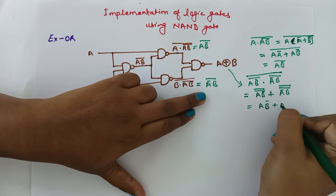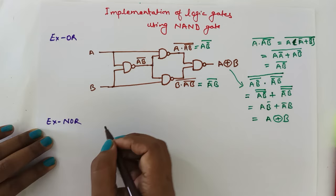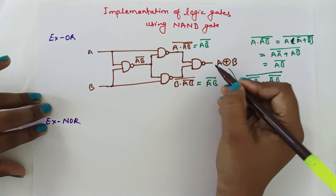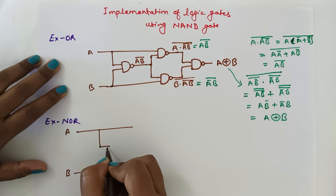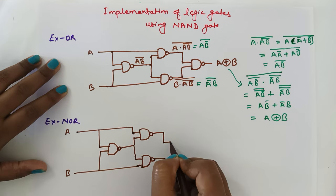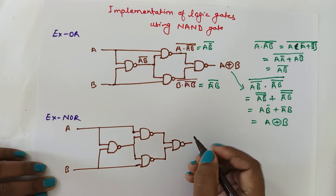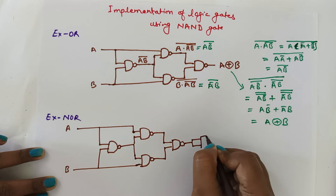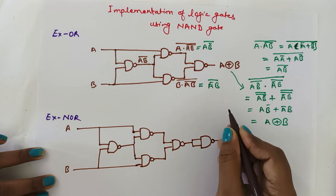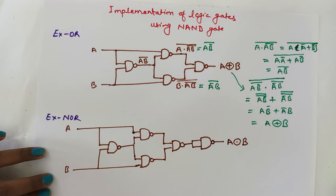Now let's design XNOR gate with NAND gate. For designing XNOR gate from NAND gate, we need to put a NOT gate after the XOR gate. Up to this point it is XOR gate — similar to what we already designed — and after this we put a NOT gate. We have already seen how to design a NOT gate using NAND gate.